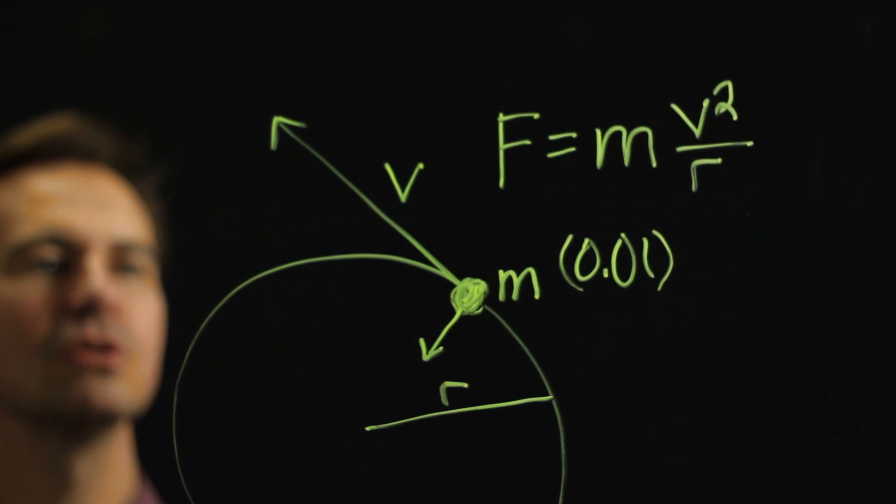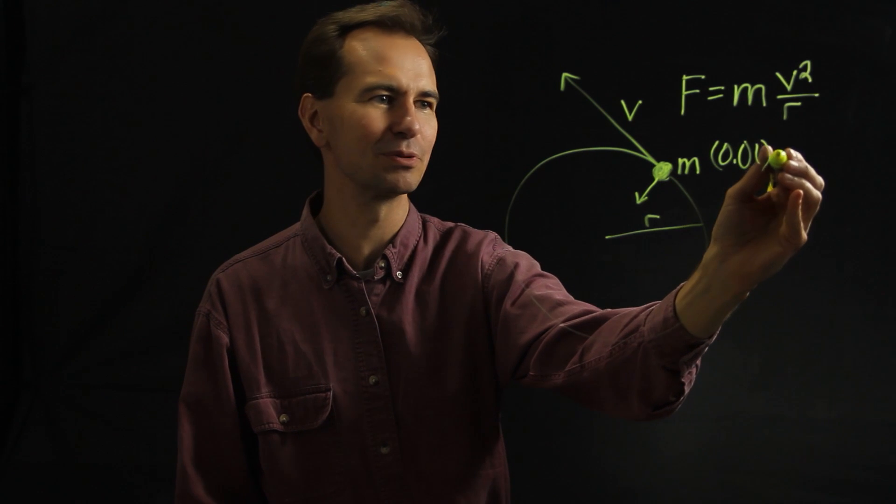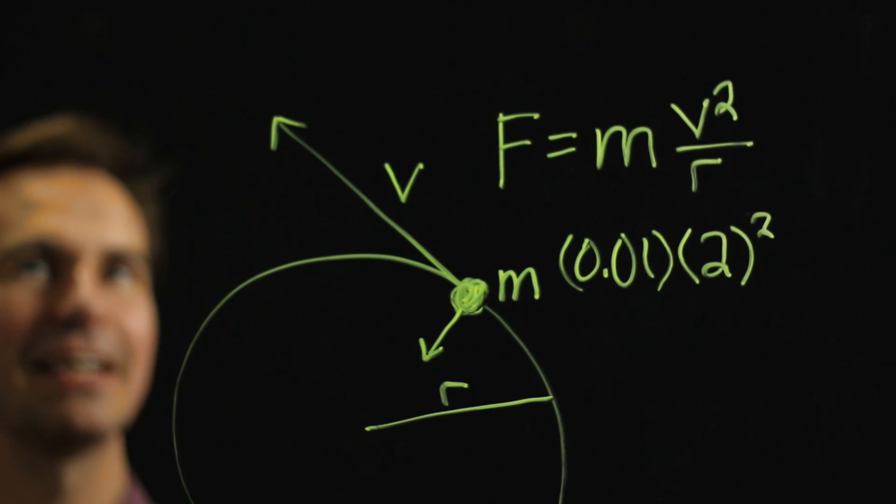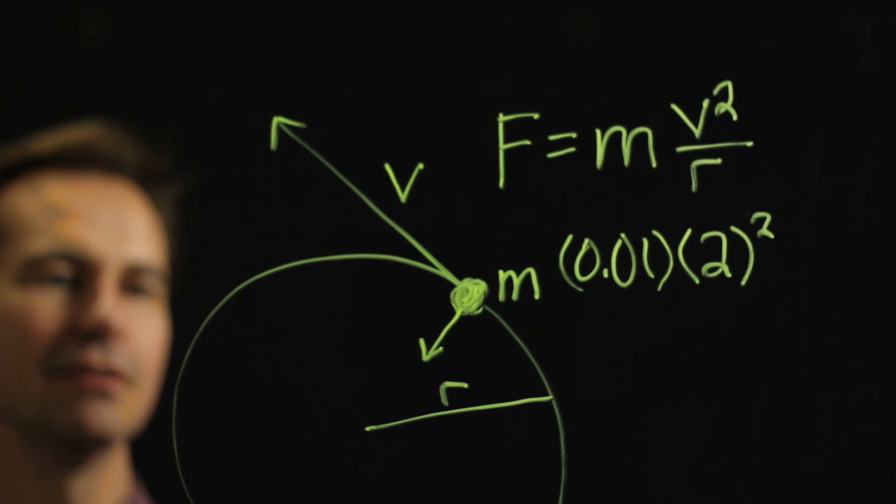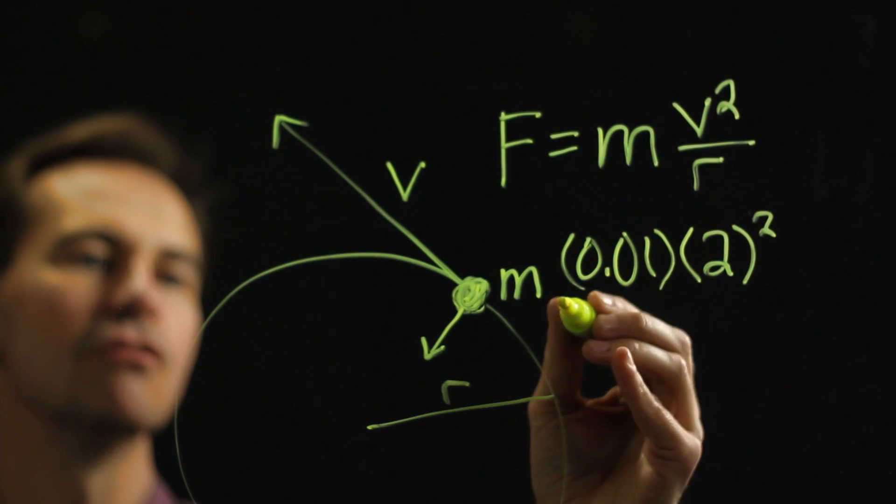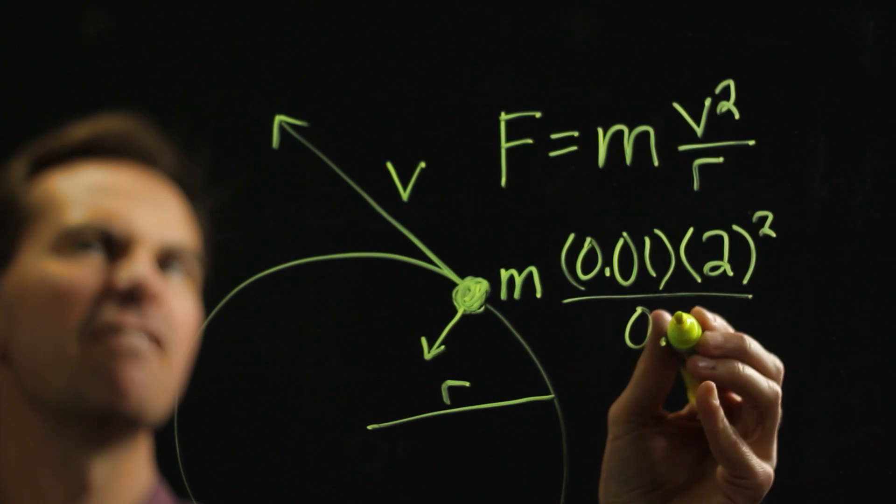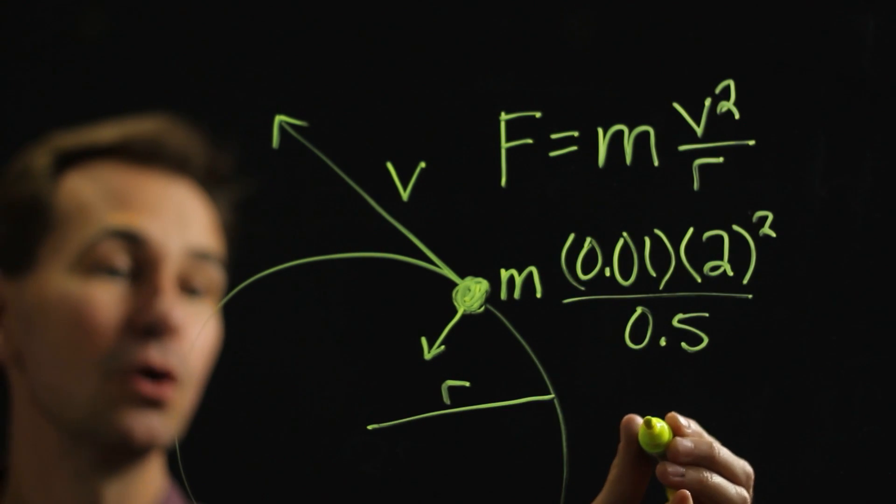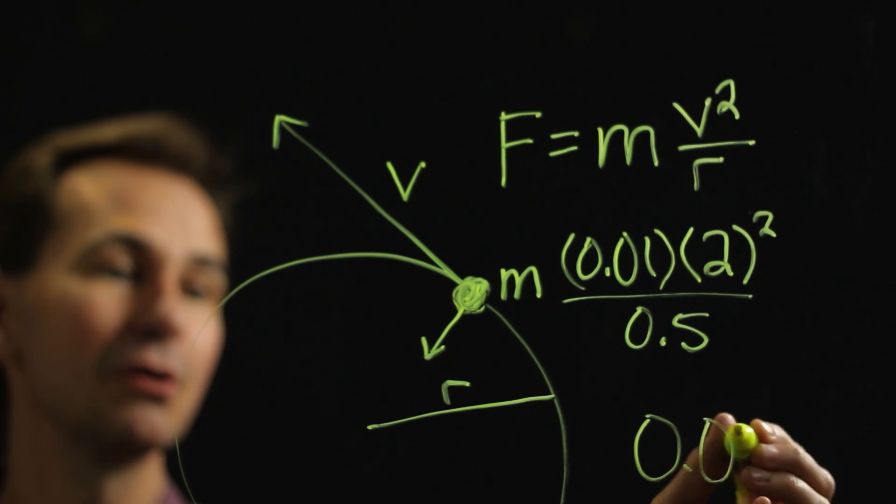And suppose it's going at a speed of 2 meters per second. So that would be my V. And let's say it's going in a circle with a radius of 0.5 meters. So, if we multiply all that together, we get 0.08.